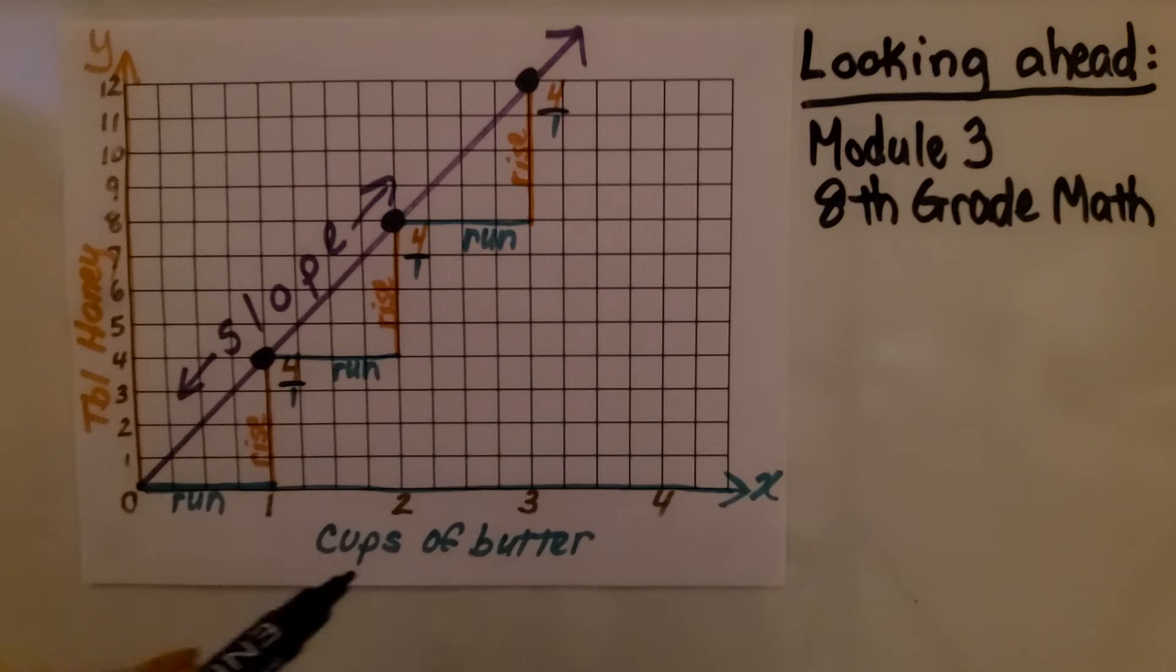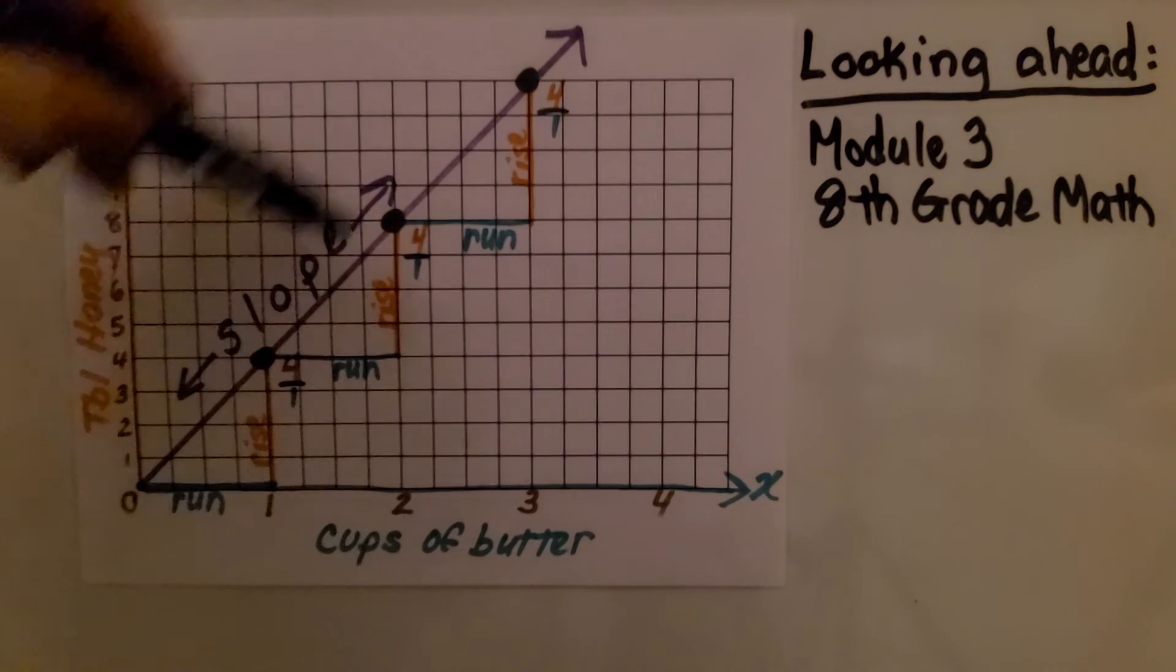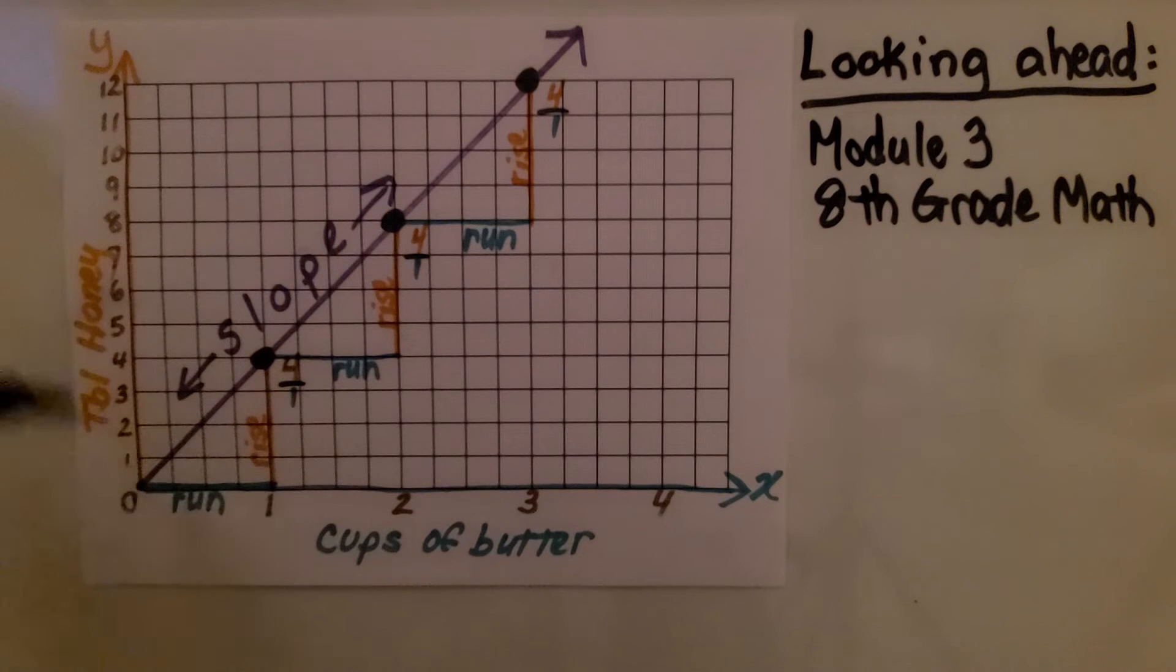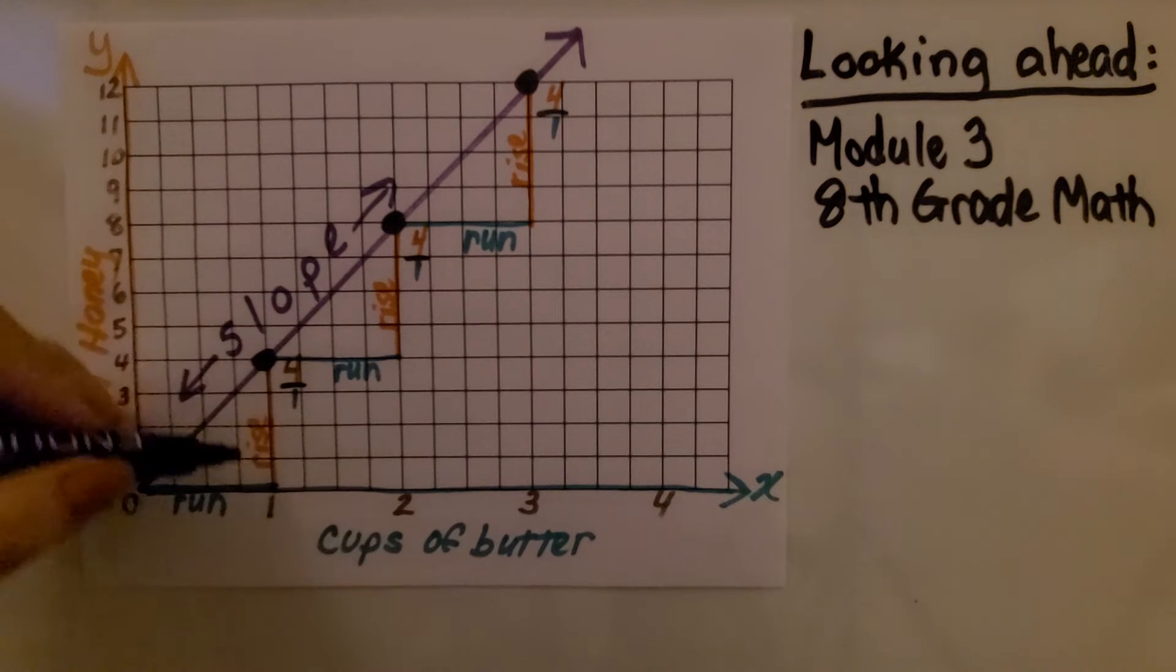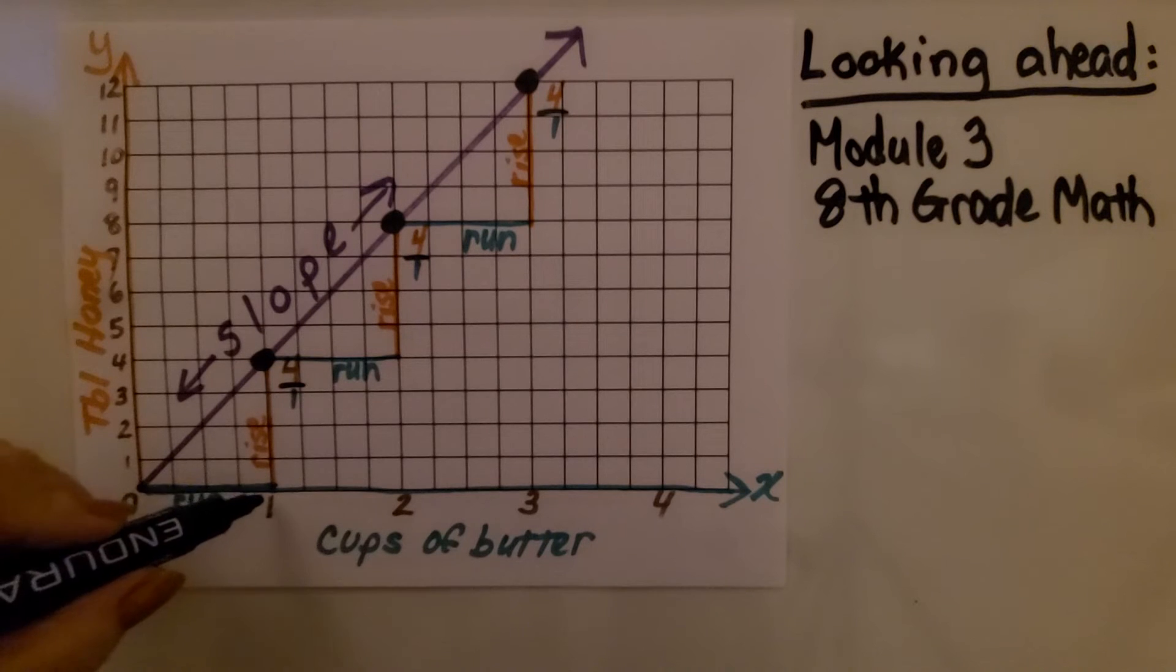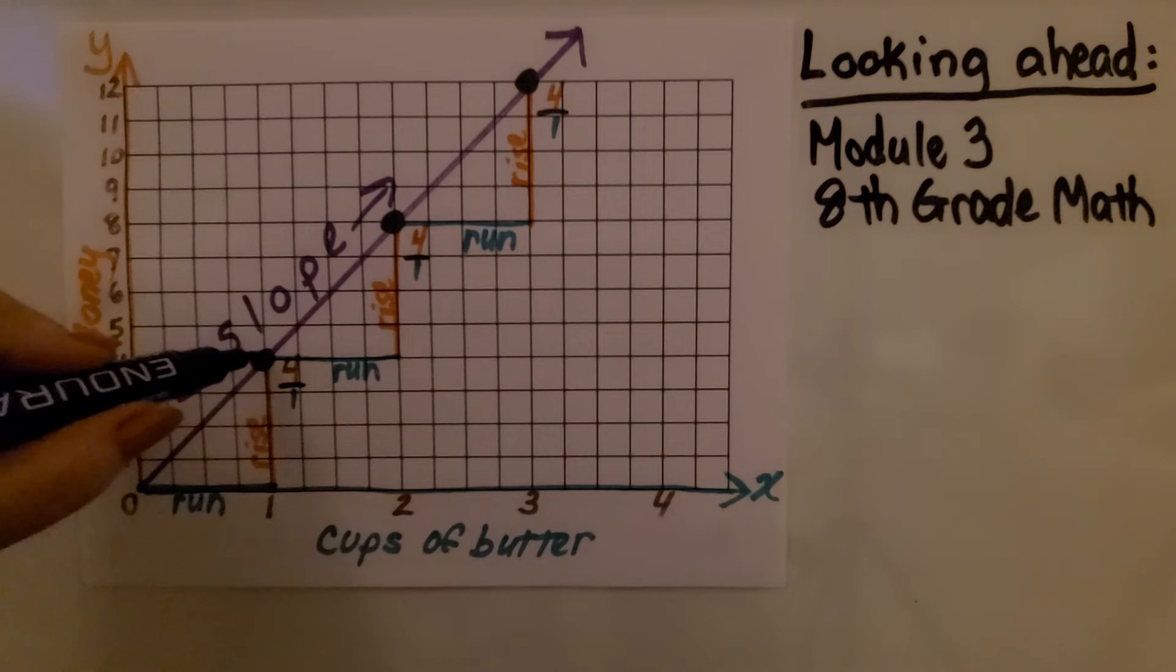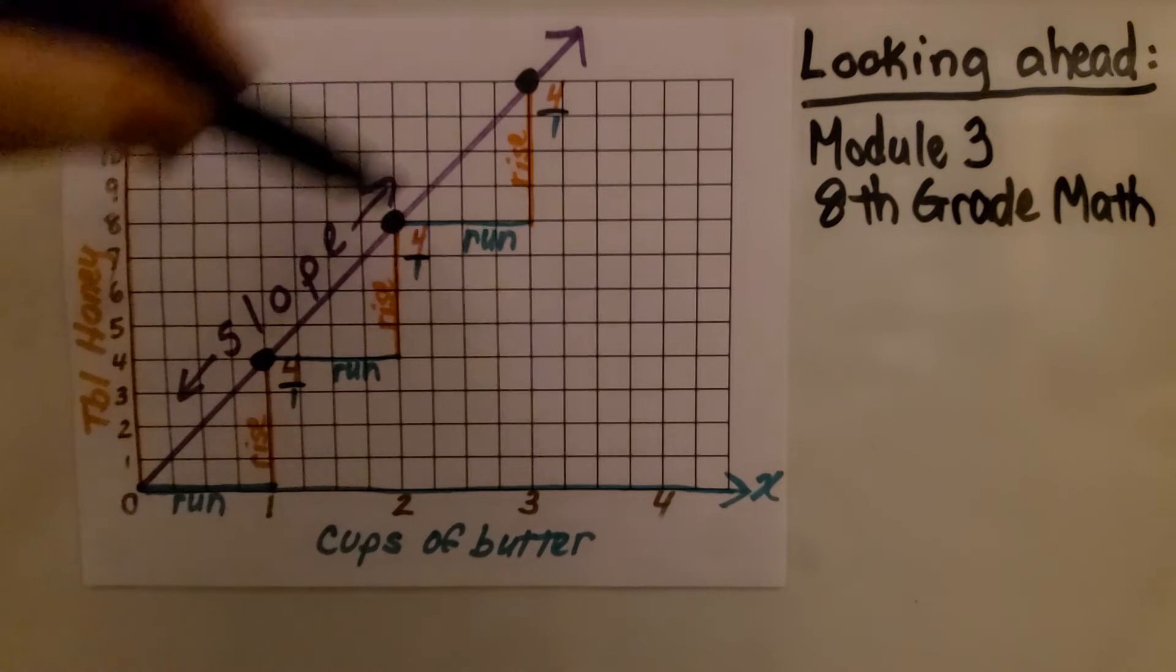We have our cups of butter and our tablespoons of honey. This line is called the slope. It's the slope of the equation y is equal to 4x. We have our rise, which is 4, that's how much it's rising up. And we have our run, which is 1. So, 1 cup of butter, 4 tablespoons of honey. We have our rise over our run, and it's going to equal the slope. That's the slope of the line.